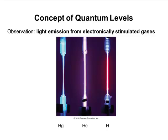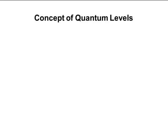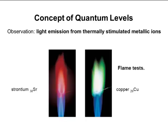When we pass current through a glass tube that's filled with a gas of a certain element, we get light emitted. And that light emitted is going to be at very specific wavelengths of light associated with that specific element. So we can electronically stimulate these gases to provide light. Another observation is that we get light emission from thermally stimulated metallic ions — the flame test — when we put these metal salts in a flame, we get light out.